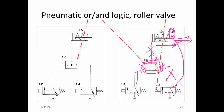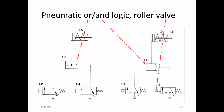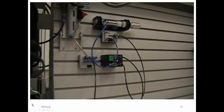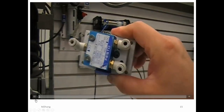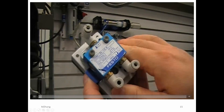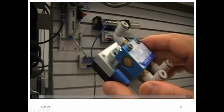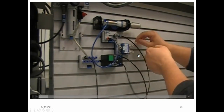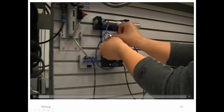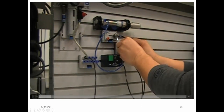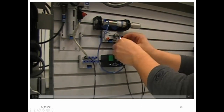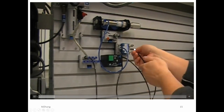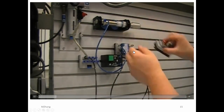I can show you later, but I want you to look at it yourself first. Let's look at the demo for the next slide. You can see the symbol here — this is the AND gate, this is the OR gate. So add that on here. Now I can remove the one-way flow control valve; we don't need that anymore. So that's the output, and that's one end of the AND logic.